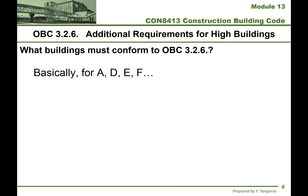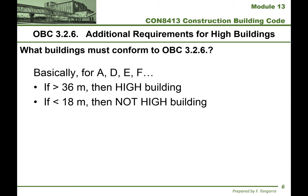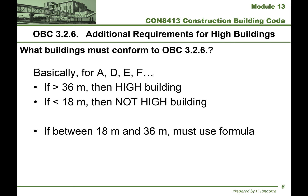For occupancies A — so that's all A's — D, E, and all F's: if your building is more than 36 meters high, it's considered a high building under 3.2.6. If your building is less than 18 meters, it's not a high building. But if it's between 18 and 36 meters, you must use a specific formula that's written out in words in the building code, which we will go over as part of this lecture.